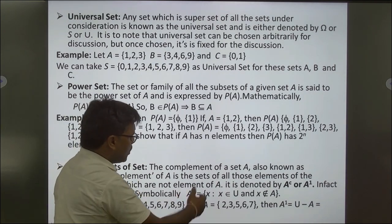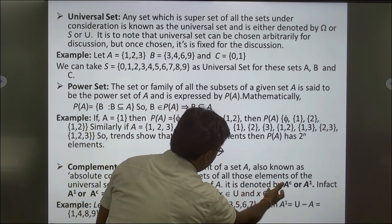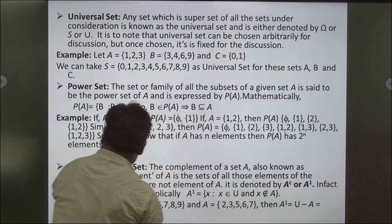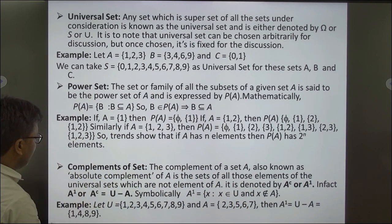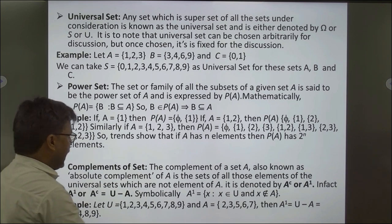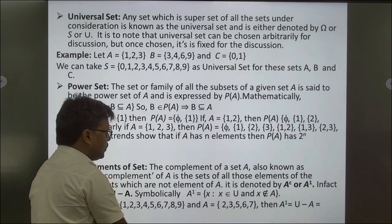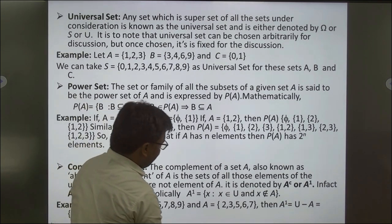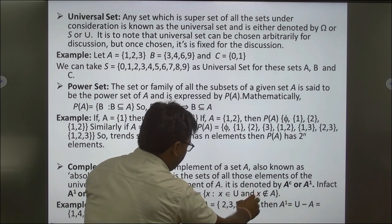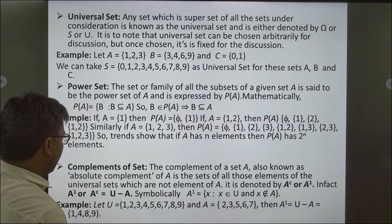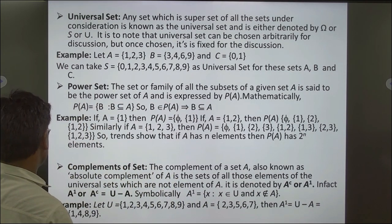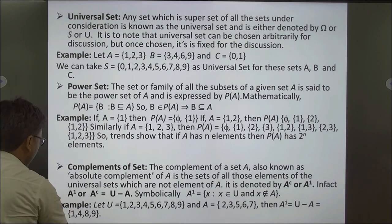Complement of a Set: The complement of set A, also known as the absolute complement, is the set of all elements of the universal set U which are not elements of A. It is denoted A' or Aᶜ. Thus A' = {x : x ∈ U and x ∉ A}. For example, if U = {1,2,3,4,5,6,7,8,9} and A = {2,3,5,6,7}, then Aᶜ = U − A = {1, 4, 8, 9}.